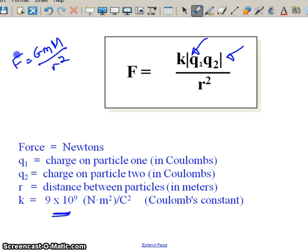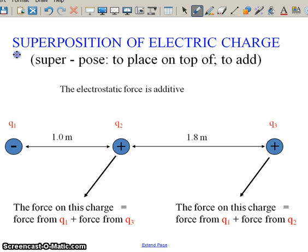And so, but if you notice, we have one value for q1 and one value for q2. We only deal with two charges. Well, what happens when there are more? Well, it turns out that electrostatic force is additive. It's called superposition of electric charge, and as it says there, superpose: to place on top of, to add.